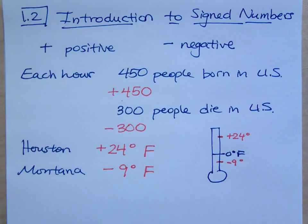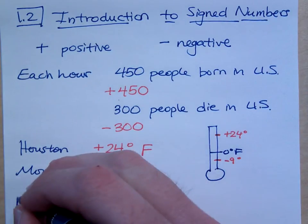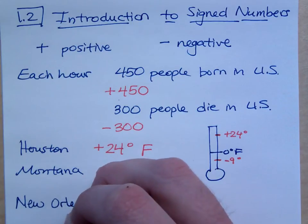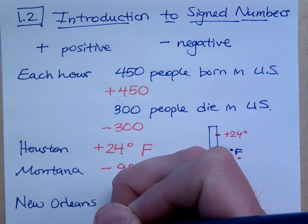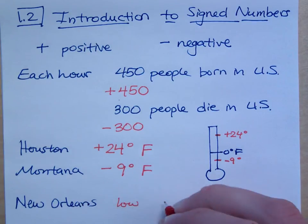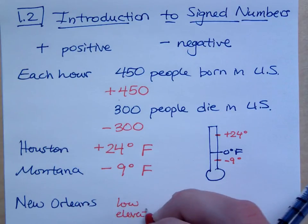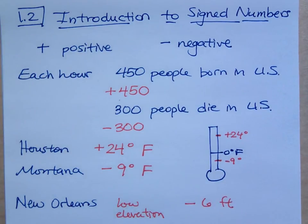How about New Orleans? Anybody ever been to New Orleans? New Orleans got hit by Hurricane Katrina back in 2005. There was a lot of flooding. Do you know why there was a lot of flooding in New Orleans? The city is like a bowl. The elevation of New Orleans, the low elevation for New Orleans is negative 6 feet. When I say negative 6 feet, when we're talking about elevation, we're measuring elevation based on what? Sea level.